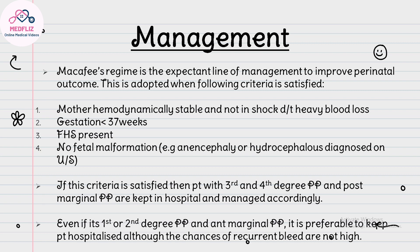McPhee's regime is the expectant line of management to improve perinatal outcome. This is adopted when: the mother is hemodynamically stable and not in shock, gestational age is less than 37 weeks, fetal heart sounds are present, and there is no fetal malformation such as anencephaly or hydrocephalus diagnosed on ultrasound. Patients with 3rd and 4th degree placenta previa and posterior marginal placenta previa are kept in hospital. For 1st or 2nd degree and anterior marginal previa, hospitalization is preferable although chances of recurrent bleeding are not high.